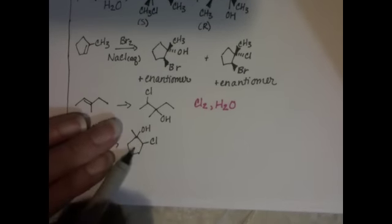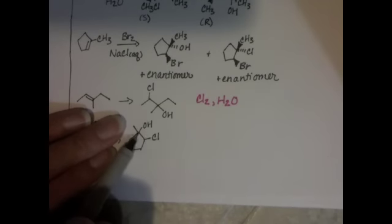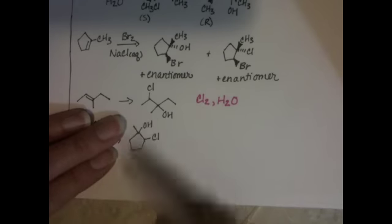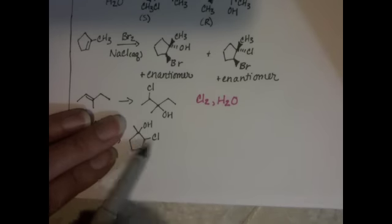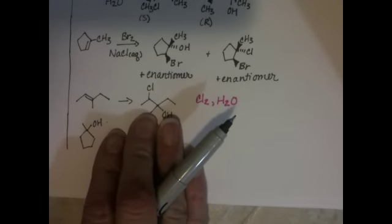So we want to ask ourselves, do we know how to make this molecule? Yeah, we just learned if there was an alkene right here, we could put the OH group and the Cl group on the molecule. So if it was this with an alkene right there, we could produce that. And then we want to ask ourselves, can we turn this into an alkene?